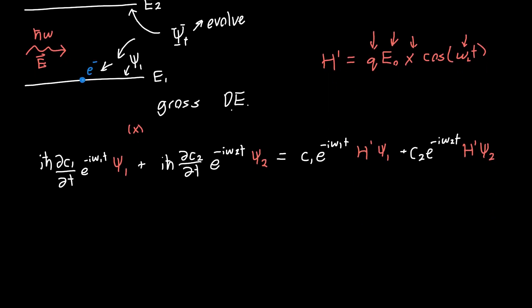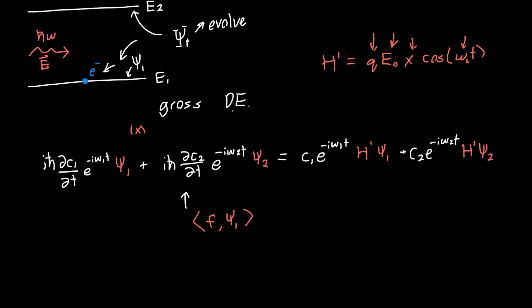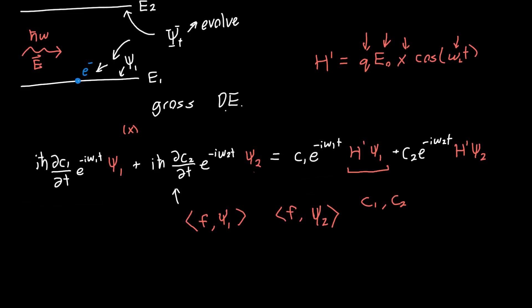If you've watched the previous videos, you know that in order to simplify this, to make this tractable, we want to take the inner product of this whole thing, both sides, with psi 1. And we also want to take the inner product with psi 2. These will give us two different equations in terms of c1, c2, and their derivatives, which are fairly uncoupled from each other. At this point, I recommend you try taking the inner products yourself. If you get stuck on the inner products with these guys, you can just leave them as is.